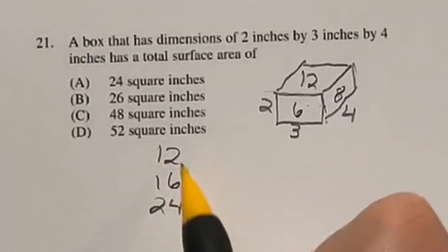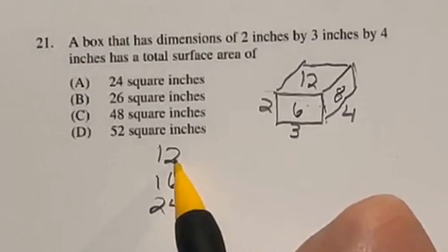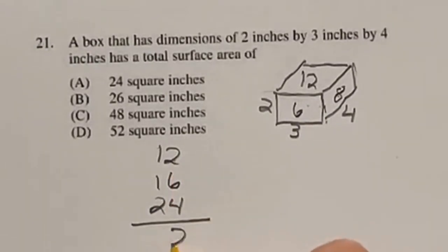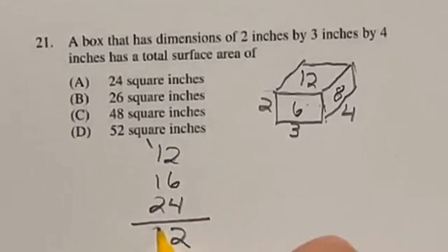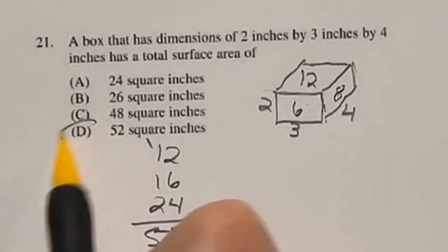Then we need to add all of these up to get our surface area, so 6 and 4 is going to give me 10, another 2 will leave me with 2 and 1 over there, so 2, 3, 4, 5. So our final answer should be 52, which is answer D.